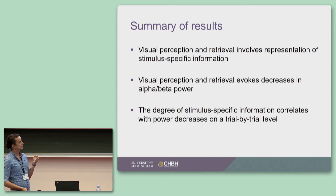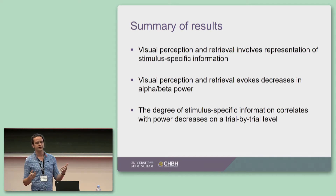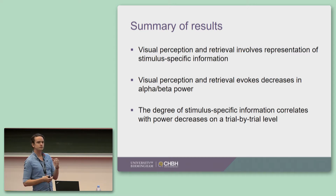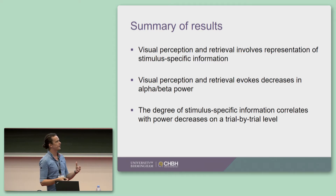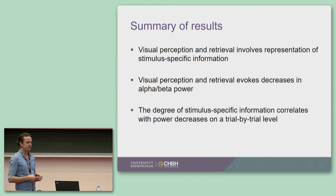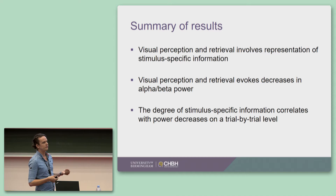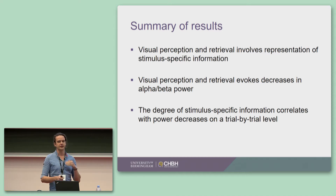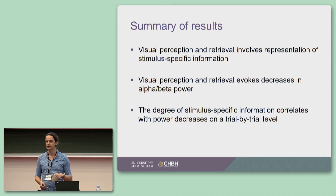So in summary: for both visual perception and retrieval, you can very nicely decode the stimulus content. And when you can decode the stimulus content, you can also see a very nice alpha-beta power decrease. The novel and exciting part is that these two markers seem to correlate on a trial-by-trial level — so the more your alpha-beta power decreases on a given trial, the more information there appears to be within the neocortex.